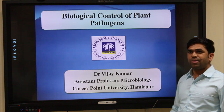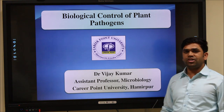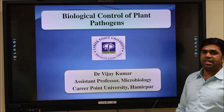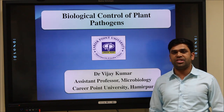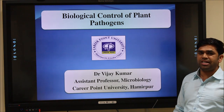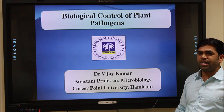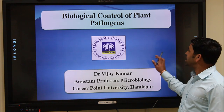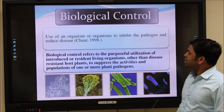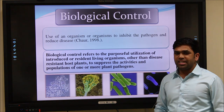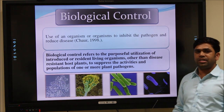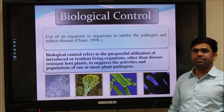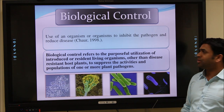So what is biological control? Biological control means the control of pathogens — pathogens which cause disease in plants. These pathogens can be controlled by a biological entity, so the use of an organism or a group of organisms to control pathogens is referred to as biological control agents.